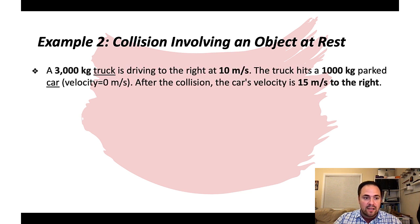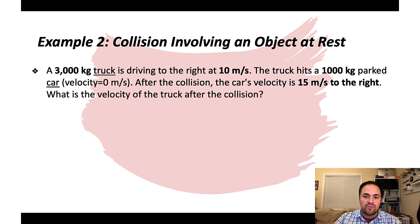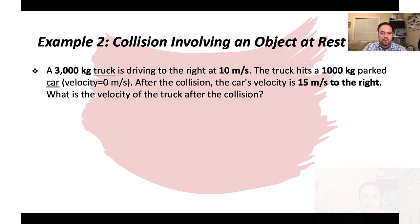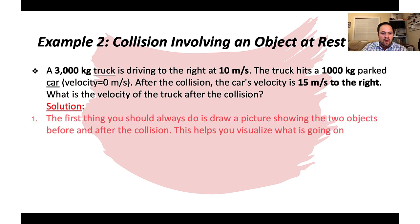Practice Problem 2 involves one object initially at rest. A 3,000 kg truck is driving to the right at 10 m/s. It hits a 1,000 kg parked car with a velocity of zero. After the collision, the car's velocity is 15 m/s to the right. What is the velocity of the truck after the collision? Pause and try it. A tip: draw a picture showing the two objects before and after the collision to help visualize.